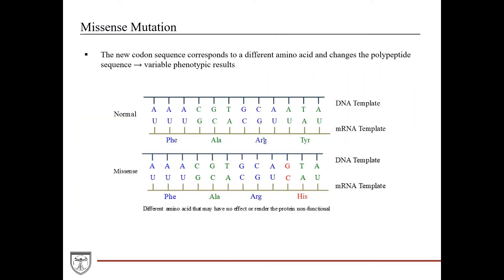Before explaining the missense mutation, there are a few errors in this diagram to correct. The codon sequence shown is incorrect — make sure you correct it to GCA for the normal and CGU for the mutant. We have it marked as a glycine, which is incorrect. Make sure you change it to show that histidine is the amino acid that results from the mutation.